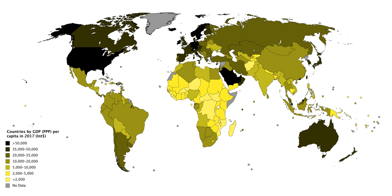An IMF investigation estimates that circa 40% of global FDI flows, which heavily influence the GDP of various jurisdictions, are described as phantom transactions. A stunning $12 trillion — almost 40% of all foreign direct investment positions globally — is completely artificial. It consists of financial investment passing through empty corporate shells with no real activity.